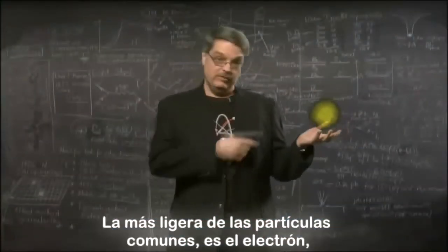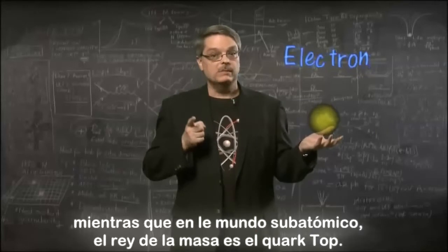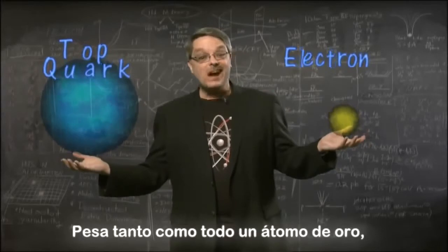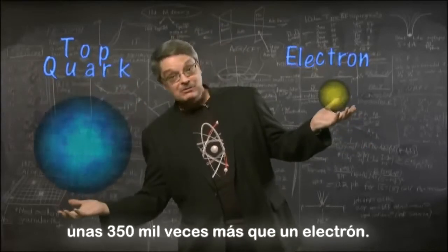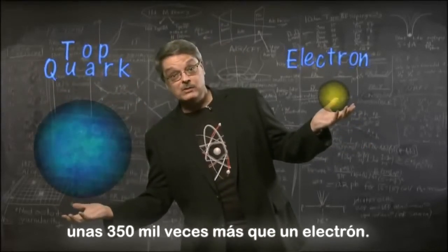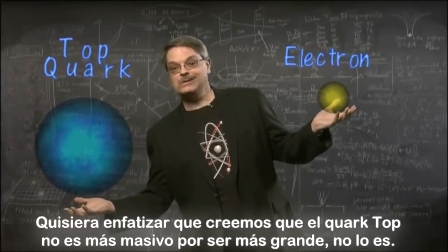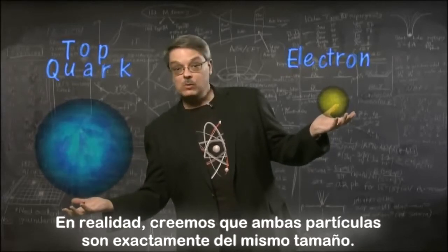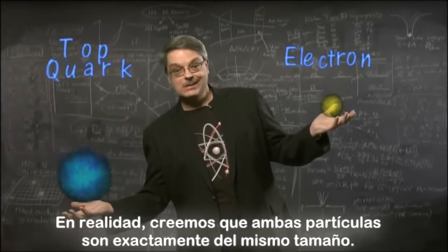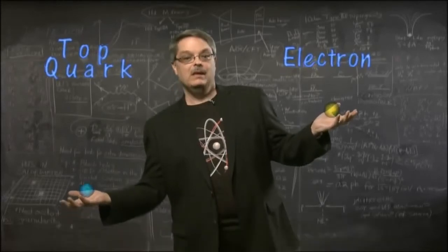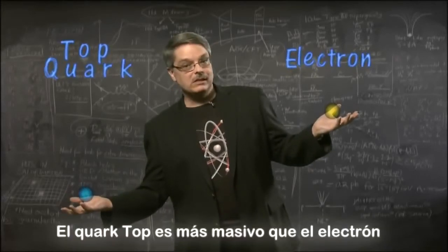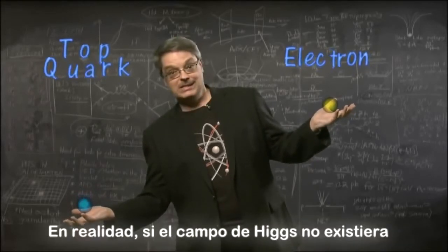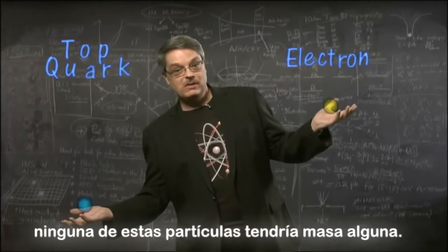The lightest of the familiar subatomic particles is the electron, while in the subatomic world, the king of mass is the top quark. It weighs about as much as an entire atom of gold, about 350,000 times more than the electron. I'd like to stress that we believe the top quark is not more massive because it's bigger — it's not. In fact, we believe that both the top quark and the electron are exactly the same size. Indeed, they both have zero size. The top quark is more massive than the electron simply because it interacts more with the Higgs field. Actually, if the Higgs field didn't exist, neither of these particles would have any mass at all.